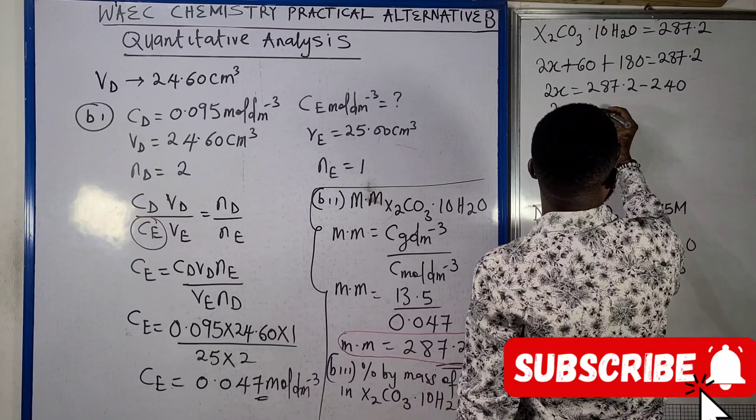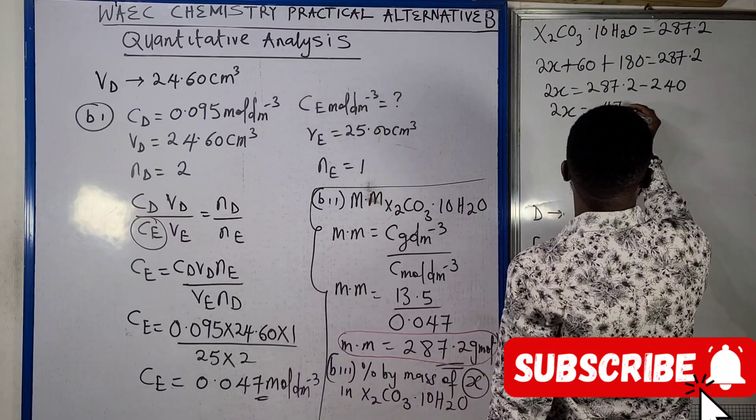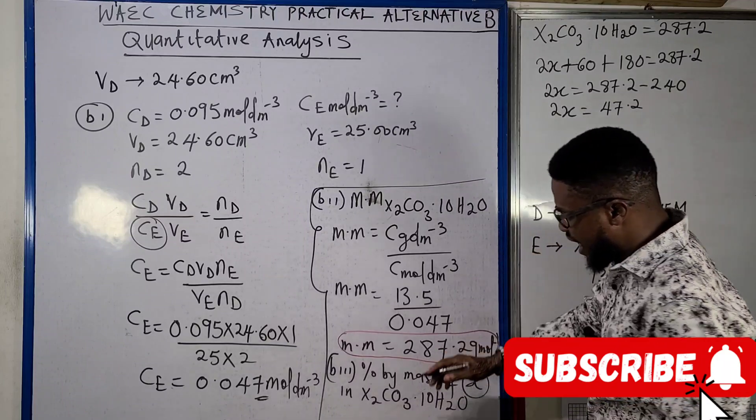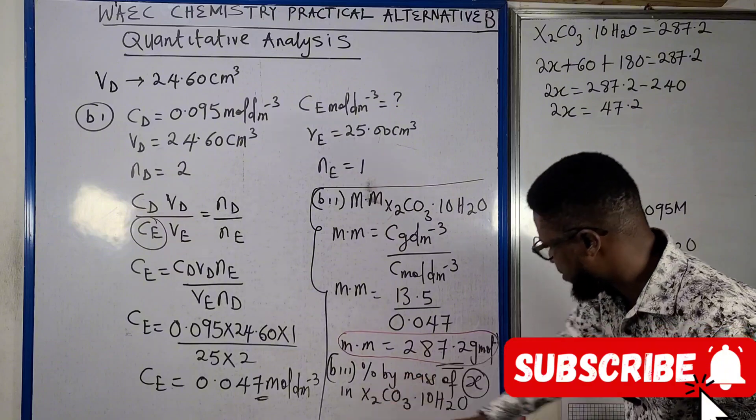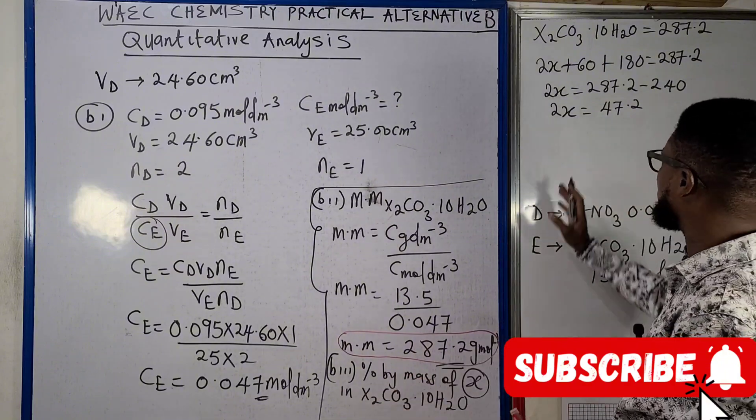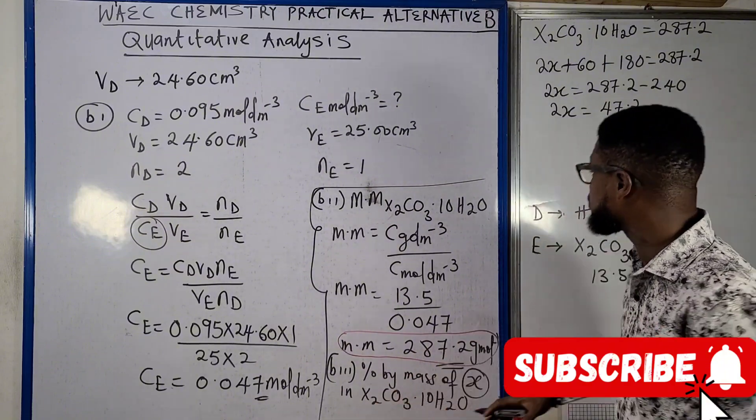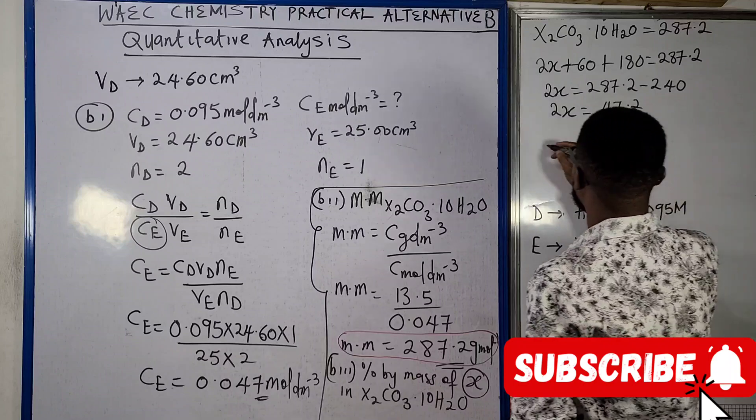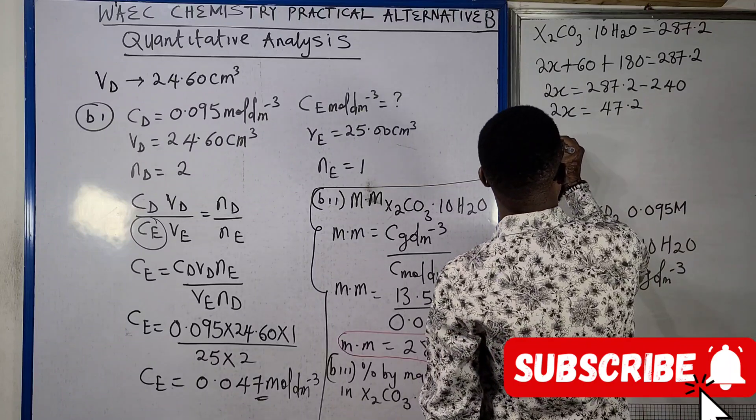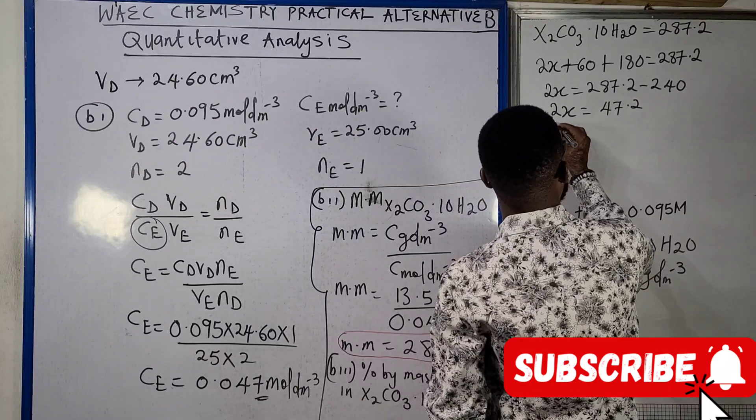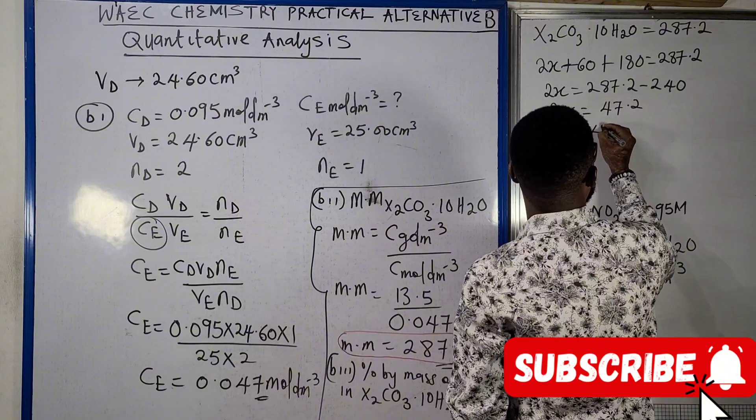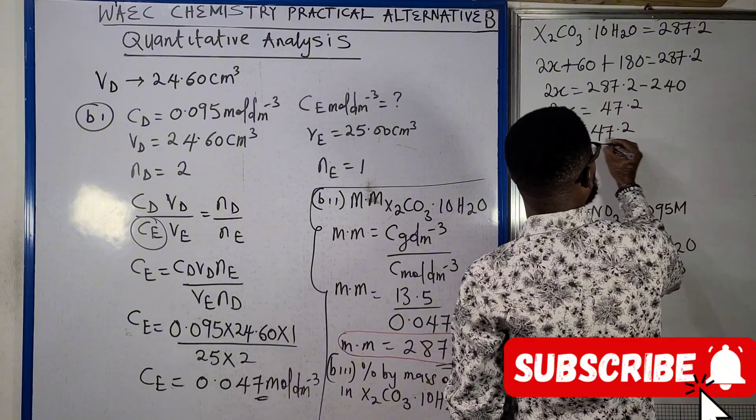So what this means is 2X equals to 287.2 minus 240, which means that 2X equals to 47.2. So which means that our Na here, we're looking for the percentage by mass of X, but since X is happening twice, 2X equals to 47.2.